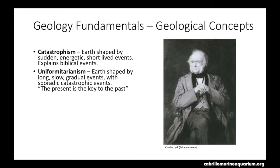The next concept is uniformitarianism, which was used to contrast catastrophism. The term was coined by William Whewell in the early 19th century, but was later popularized by Charles Lyell in his 1830 publication called Principles of Geology. What this concept stated was that earth was not created by short, energetic, sudden events, but was actually shaped by very long, slow, gradual events that had sporadic energetic events here and there. This publication also brought forth the idea that the present is the key to the past — the cycles and processes happening currently can be used to explain what happened in earth's past.